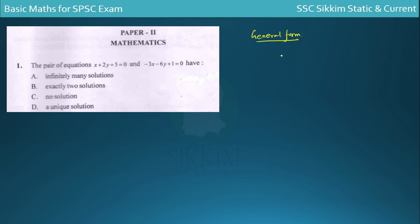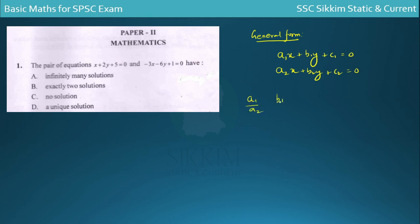We will discuss two equations. First: a1x + b1y + c1 = 0. The coefficients are a1, b1, a2, b2. In this form, you have a ratio of coefficients: A1/A2, B1/B2, and C1/C2. You can see this coefficient ratio to determine the nature of the solution.